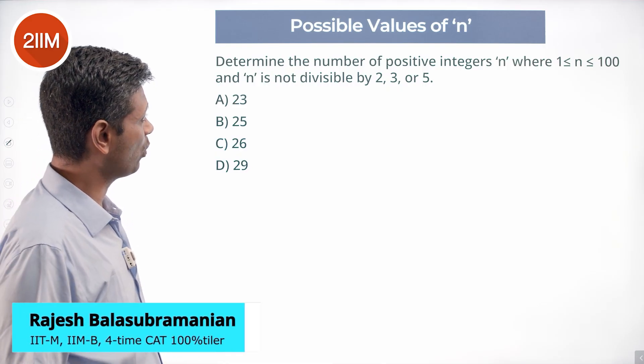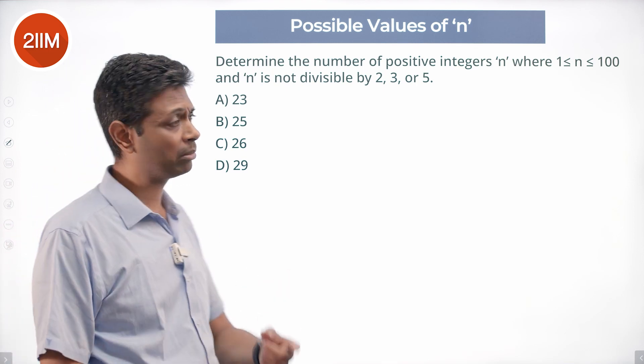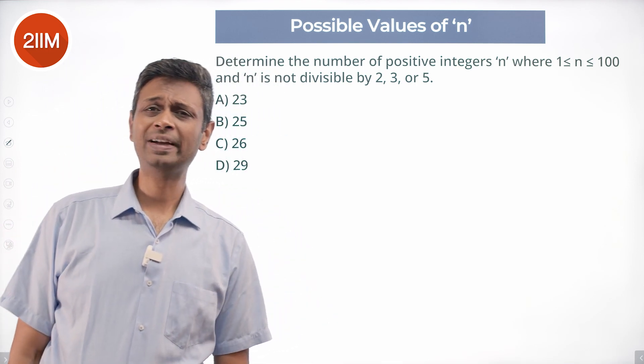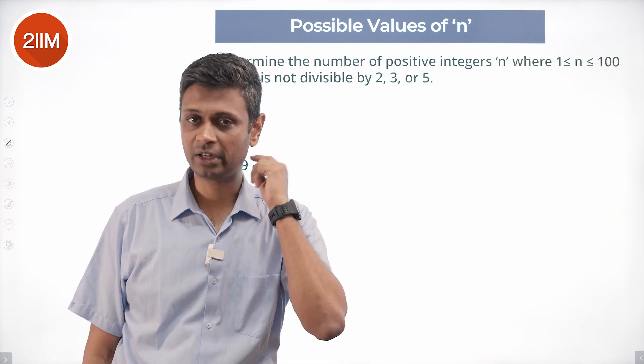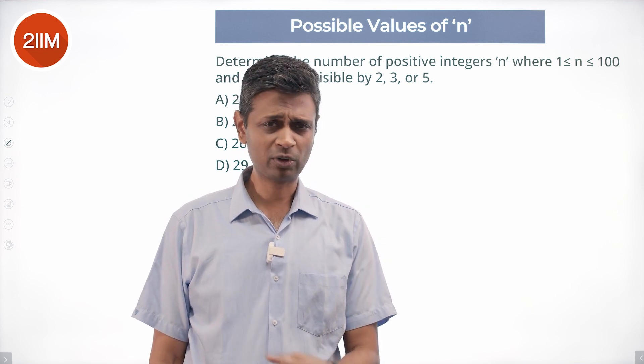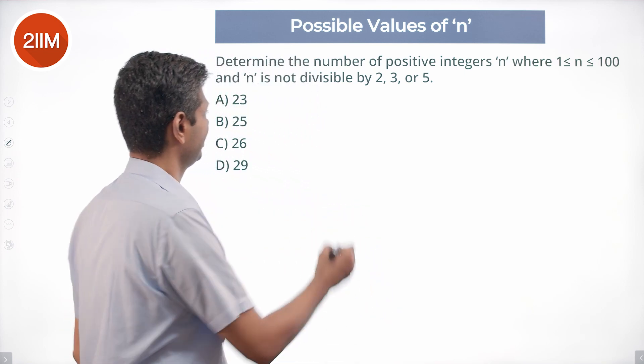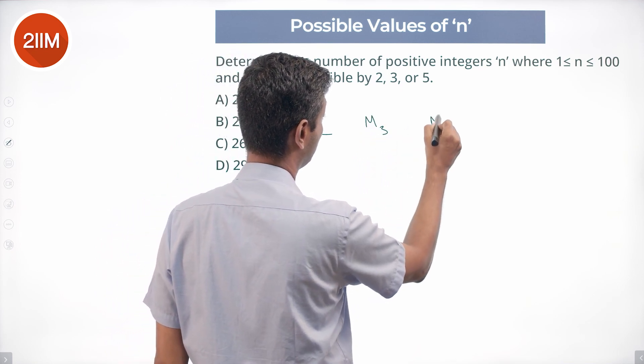Determine the number of positive integers n where 1 ≤ n ≤ 100 and n is not divisible by 2, 3, or 5. I'm going to find n divisible by 2, 3, or 5 and then subtract from 100. There are 100 natural numbers here. Find the number of multiples of 2, multiples of 3, and multiples of 5.